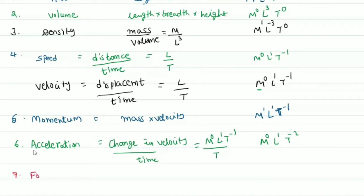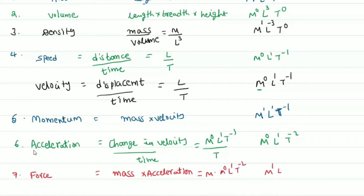Next is force. According to Newton's second law, force equals mass into acceleration. Acceleration is the rate of change of velocity. Mass gives M power 1, and acceleration gives L power 1, T power minus 2. So the dimensional formula for force is M power 1, L power 1, T power minus 2.